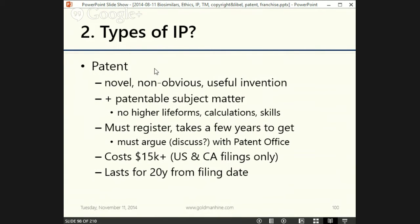The second type of intellectual property is patent. Patents cover novel, non-obvious, and useful inventions, often in the industrial arts, though they don't necessarily have to be. Business method patents, which cover just business processes, are becoming more prevalent. Patents must also cover patentable subject matter. In Canada, for example, we don't allow patenting of higher life forms, but we do allow lower life forms. There's also ongoing debate about gene sequences. No higher life forms, no pure calculations, no pure patenting of skills. You have to register patents, applying and going through a registration process where the Patent Office will identify objections to granting your patent.